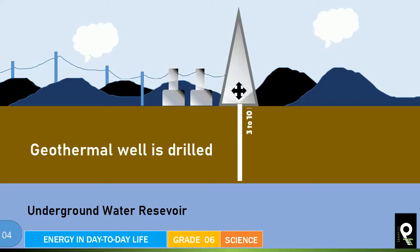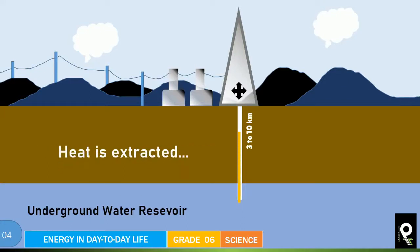The geothermal well is drilled 3 to 10 kilometers from the surface where we want to get the geothermal energy. That has to be 3 to 10 kilometers. Now, heat is extracted in the form of water and steam.